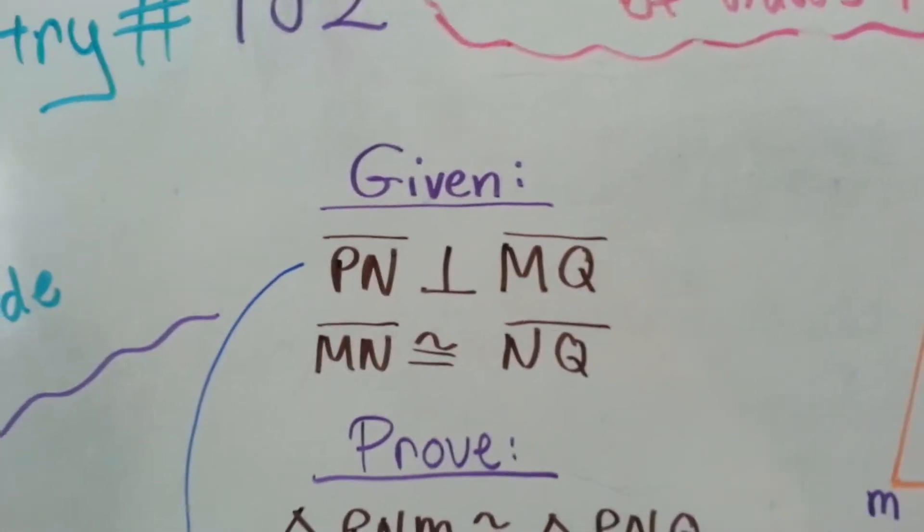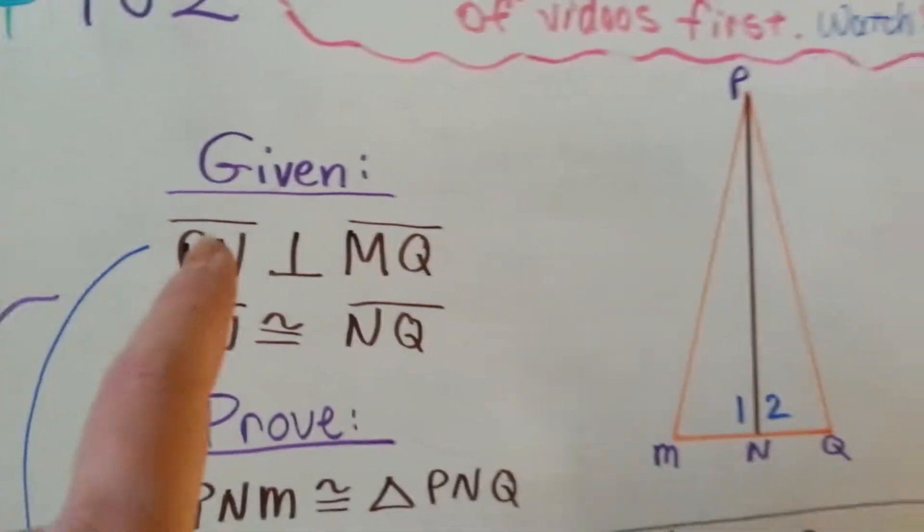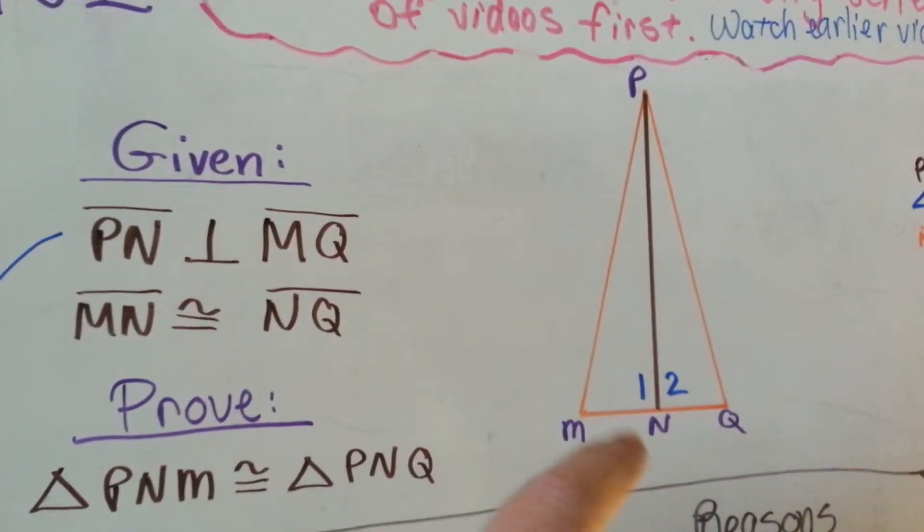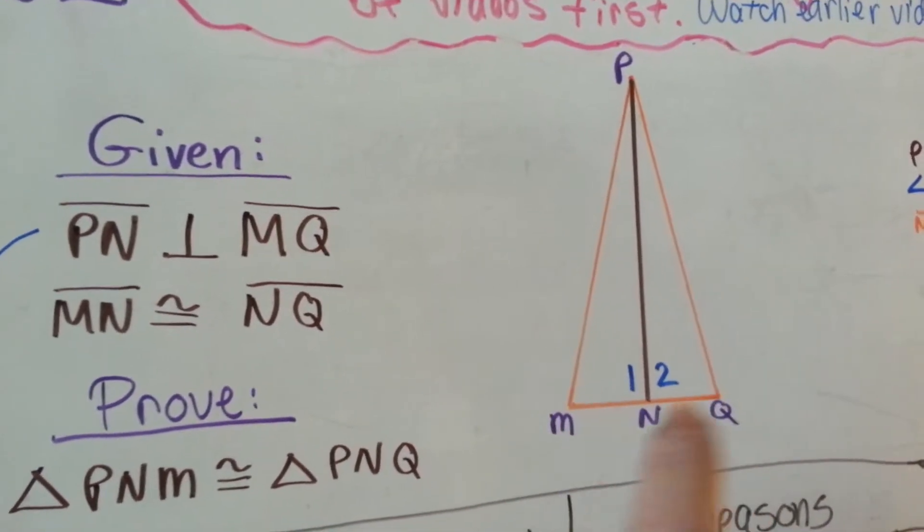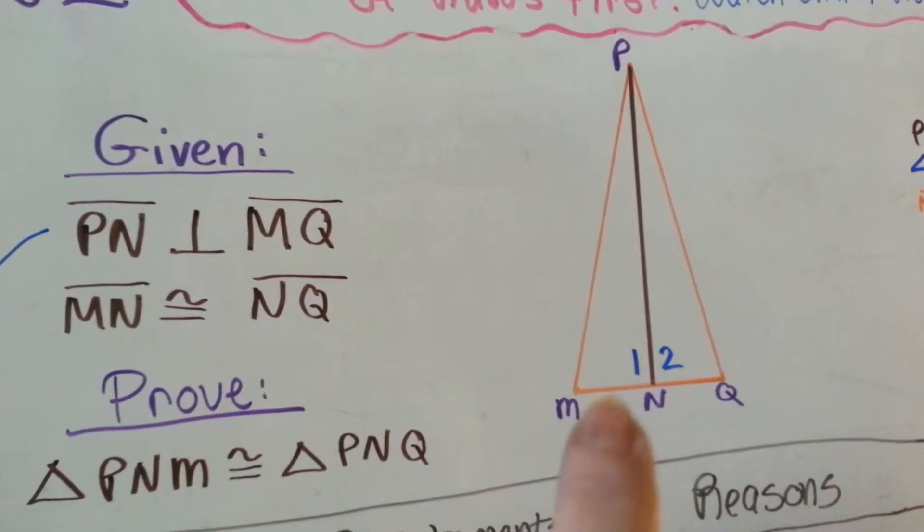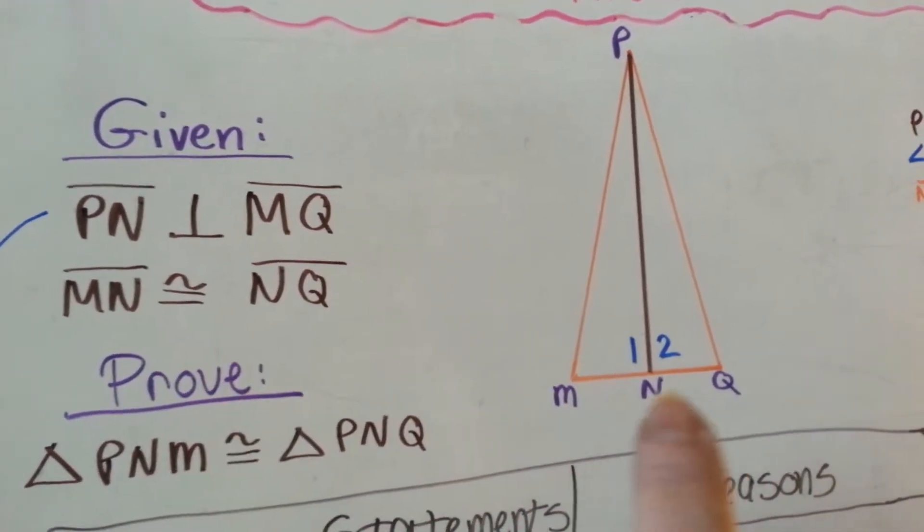Let's see what we've got here. This is the evidence and the information that was given to us. PN, the brown one, is perpendicular to MQ. Line MN, this little guy right here, this segment, is congruent to NQ.